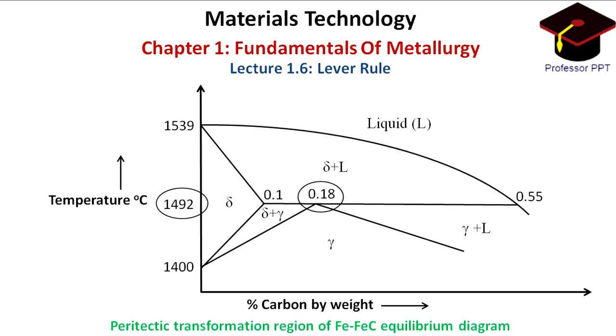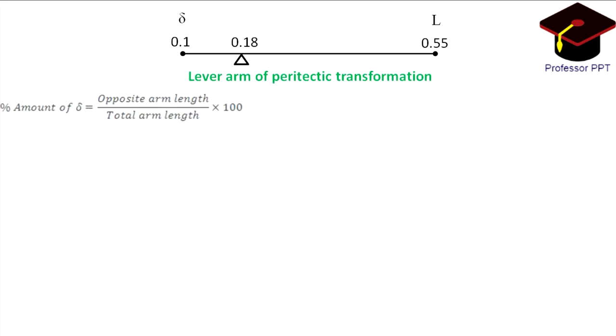The lever arm for the application of lever rule is as follows. The percentage amount of delta is the ratio of the opposite arm length and the total arm length into 100. That is equal to 0.55 minus 0.18 divided by 0.55 minus 0.1 into 100, that is equal to 82.2%.